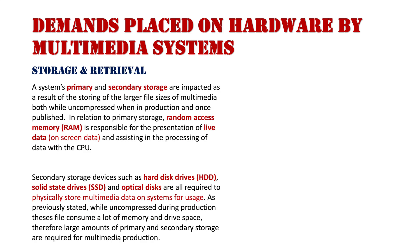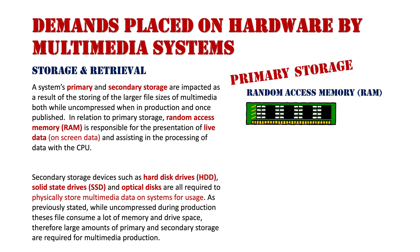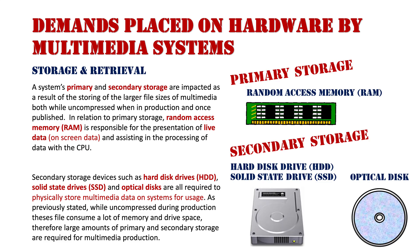The first area is storage and retrieval. We're talking about primary storage relating to random access memory, and secondary storage including hard disk drives, solid state drives, and optical disk drives. A system's primary storage will be impacted by the large file sizes of multimedia, both uncompressed in production and once published. RAM is responsible for the presentation of live data on screen — while editing a video or developing audio in something like GarageBand, RAM is working hard producing the actual data on screen, putting it under a lot of stress.